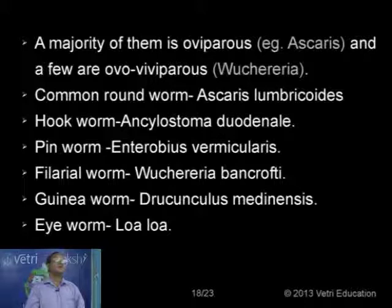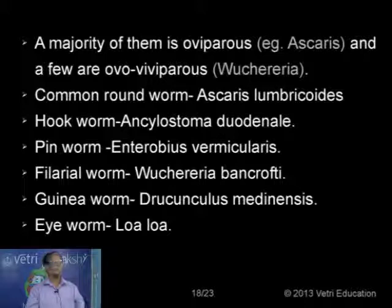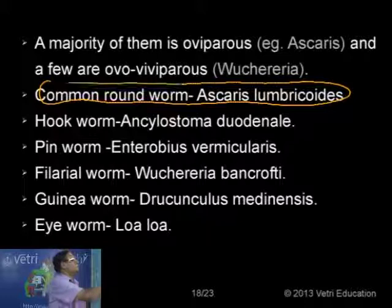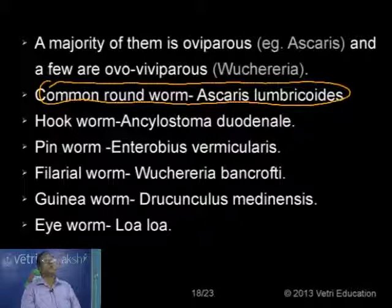Some roundworms are found in our human body. Some are formed in the intestine, some in the lymphatic system, and some others are found embedded in connective tissue. Accordingly we have examples: Ascaris lumbricoides, always found in groups in the intestine, particularly in children. It causes a disorder called ascariasis.